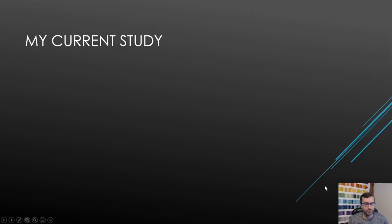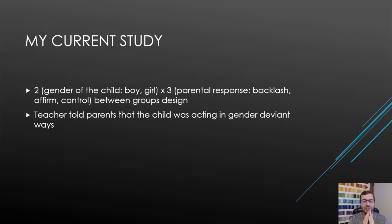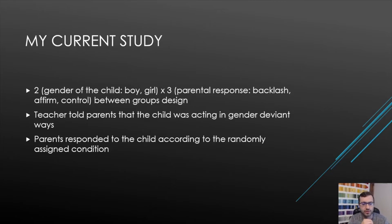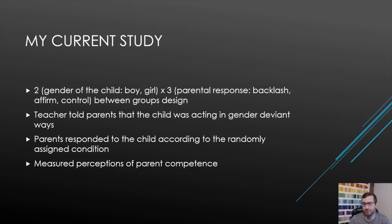In my current study, I am testing a two by three between-groups design in which I presented people with a situation where a teacher told parents that their child was acting in gender-deviant ways and that the teacher was concerned about the child. The parents then responded to the child according to randomly assigned conditions in which they either backlashed, affirmed, or were in a control condition. We also manipulated the gender of the child as being a boy or a girl to examine whether that impacted participants' perceptions of parents' levels of competence.